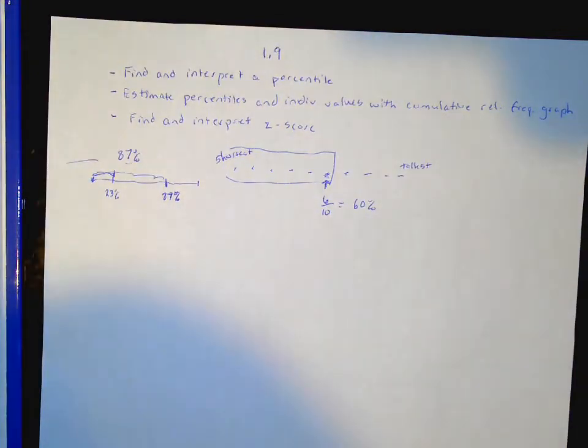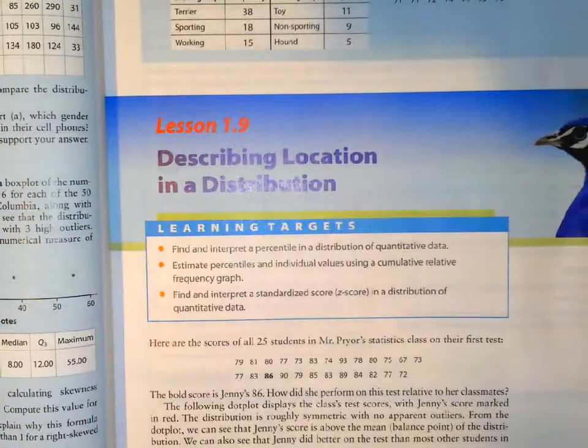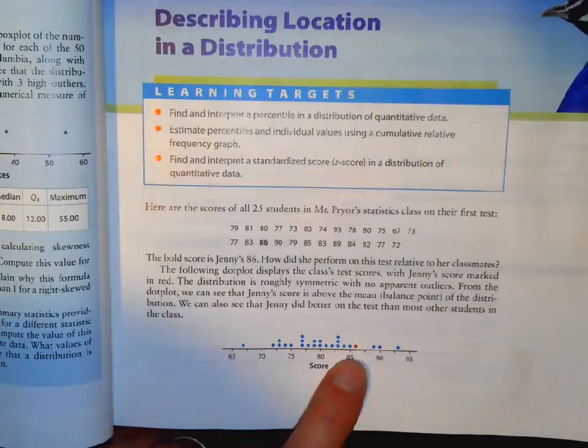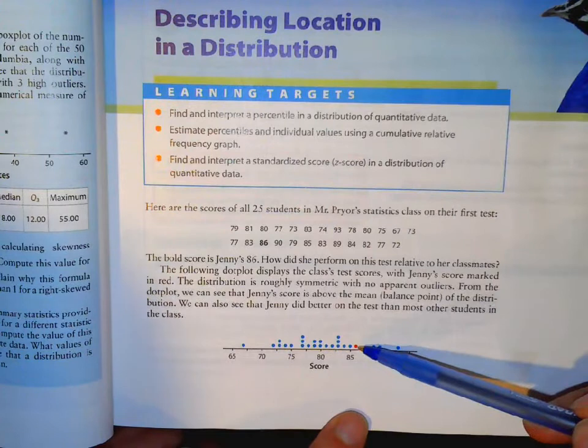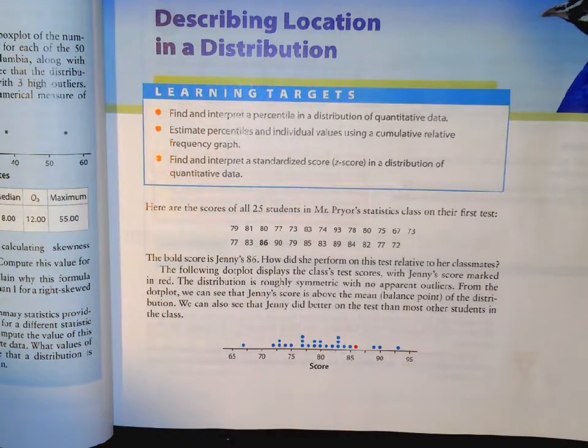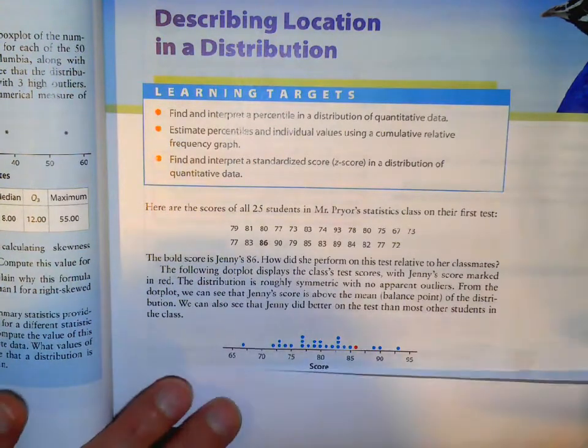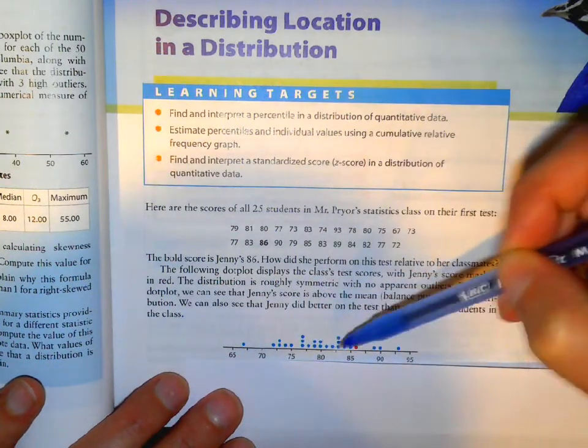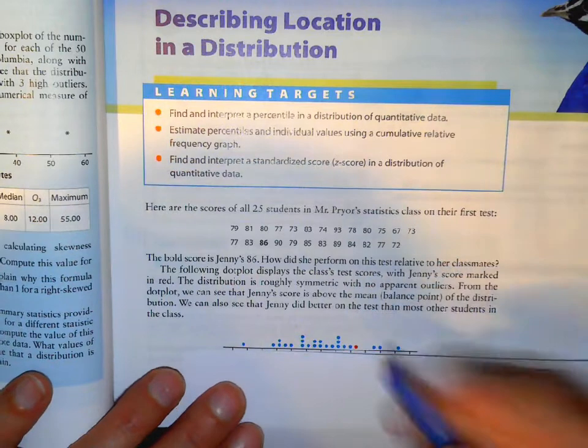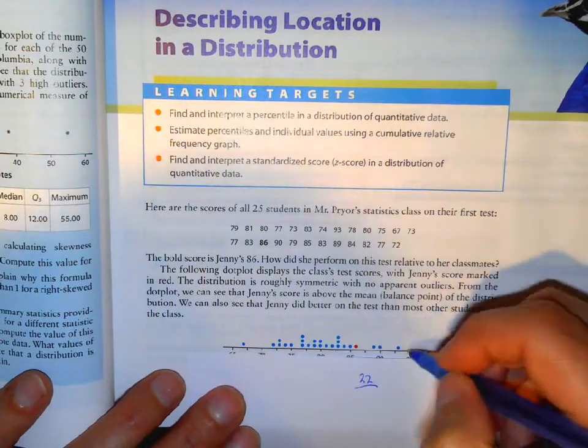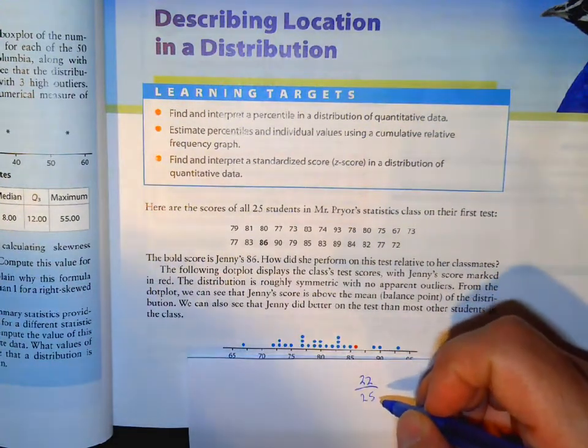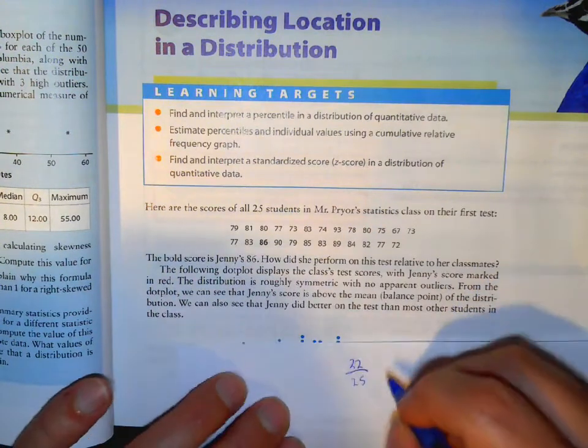So if we look at this example right here. If somebody had an 86, what percentile would they be? Pause it and figure it out. So they are 1, 2, 3, counting through... 22. They are 22nd out of 25. And if you grab your calculator, 22 divided by 25 gives you the 88th percentile. So this score is in the 88th percentile.